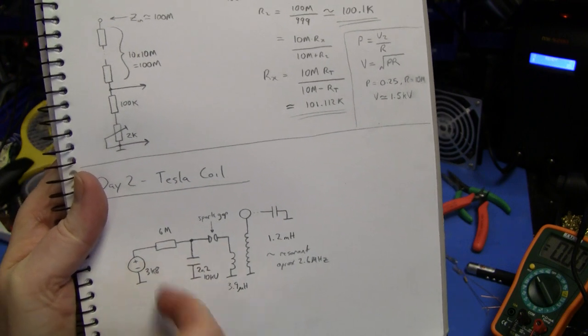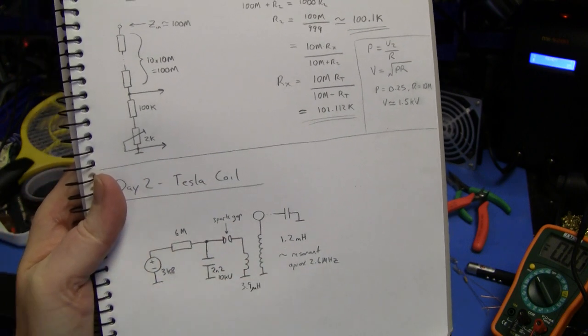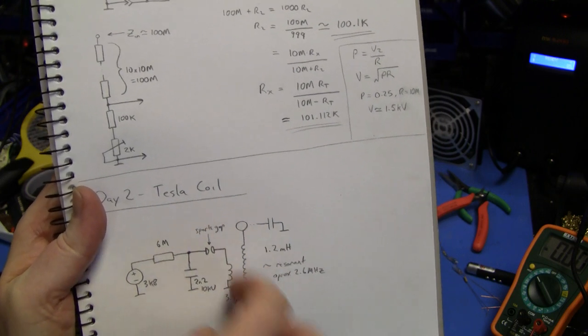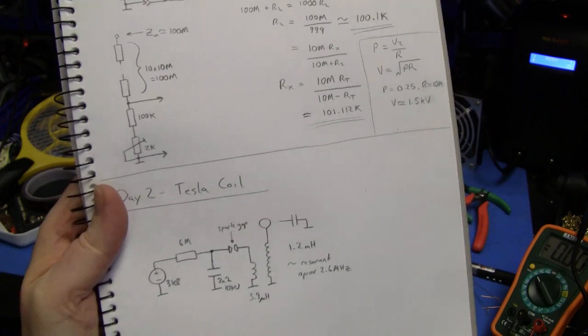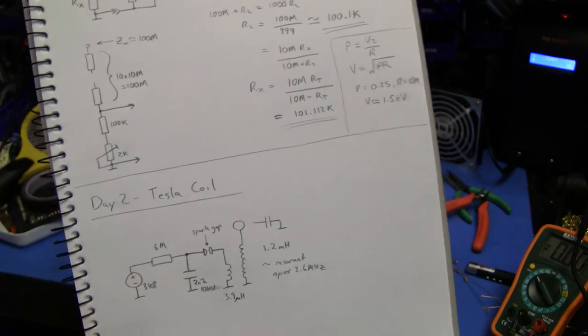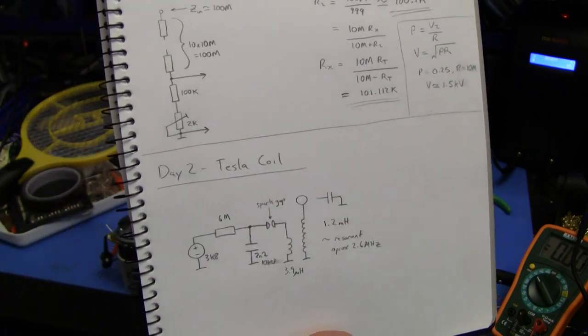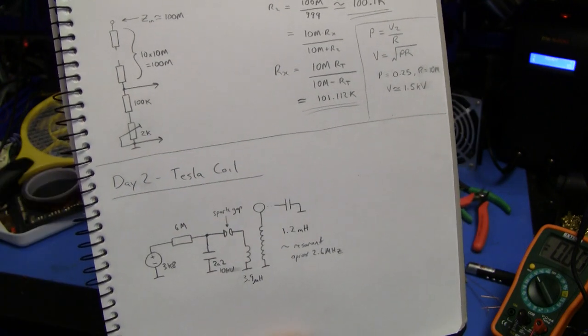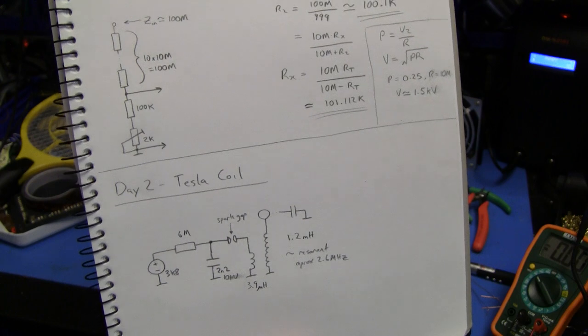So that circulating current induces a current in the secondary. The secondary via resonant exchange, because this has some capacitance, so it has a natural resonant frequency. If they're similar to the primary, there's a lot of energy exchange occurs between the two, and the secondary voltage will ring up very, very high to the point where eventually it can break down the air.